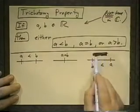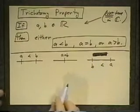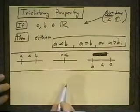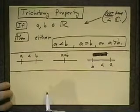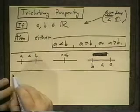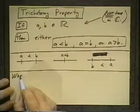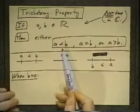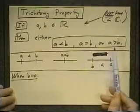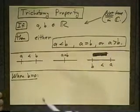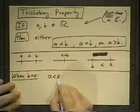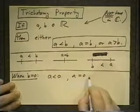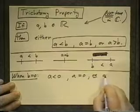Now one case is worth noting. When b is zero, we have these three possibilities: a is less than b, a is equal to b, or a is greater than b. If b is zero, what does that say? It says that a is less than zero, a is equal to zero, or a is greater than zero.